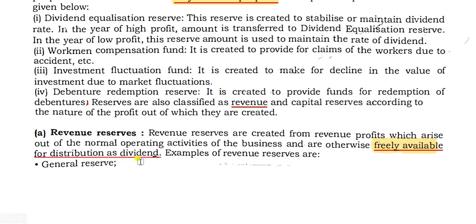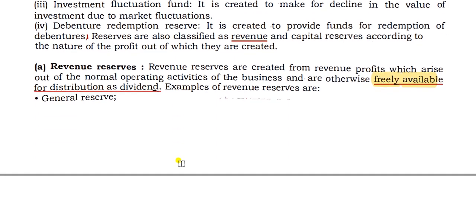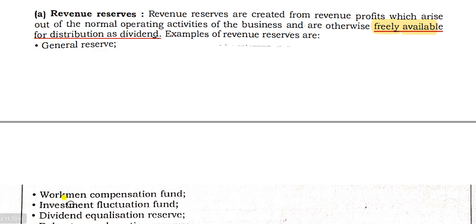Revenue Reserves are freely available for distribution as a dividend. Examples of Revenue Reserves include: General Reserve, Workman Compensation Fund, Investment Fluctuation Fund, Dividend Equalization Reserve, and Debenture Redemption Reserve.